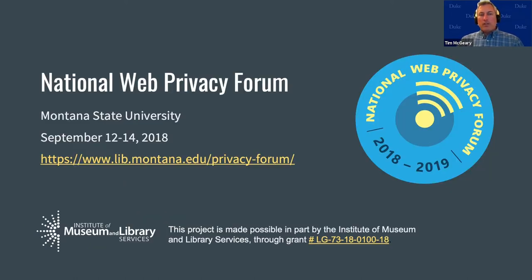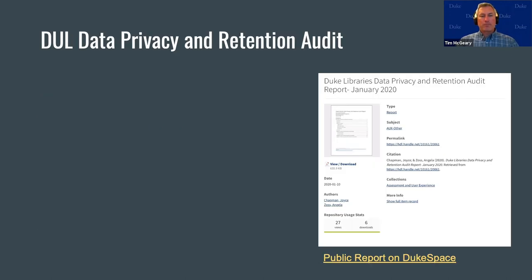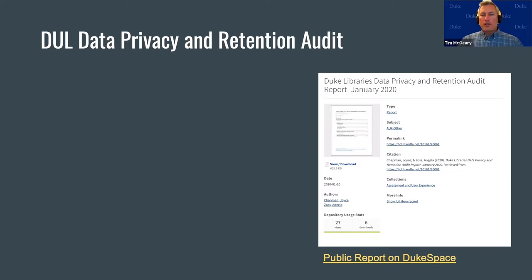In 2018, Duke University Libraries participated in the National Forum on Web Privacy and Web Analytics, an IMLS-funded grant that brought together librarians, technologists, and privacy researchers to produce a practical roadmap for enhancing analytics practice in support of privacy. DUL's participation in the Web Privacy Forum, as well as recent developments with GDPR and the CCPA, provided momentum for a deeper look at our own systems. In the fall of 2019, the Assessment and User Experience Department, inspired by recommendations in the Web Privacy Forum's White Paper and Action Handbook, conducted a data privacy and retention audit of DUL policies and procedures.